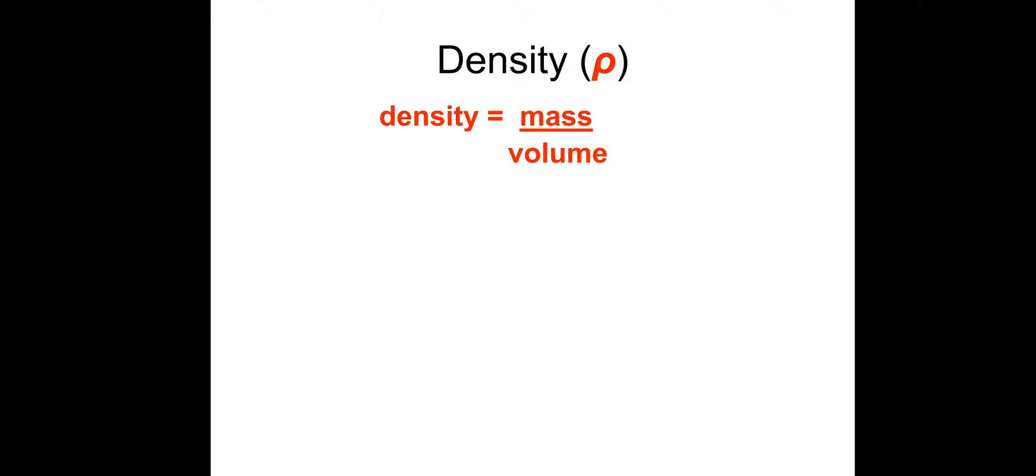Density is mass divided by volume, or rho is m over v. Density is measured in kilograms per cubic metre, or per metre cubed. One gram per centimetre cubed is the same as a thousand kilograms per cubic metre.